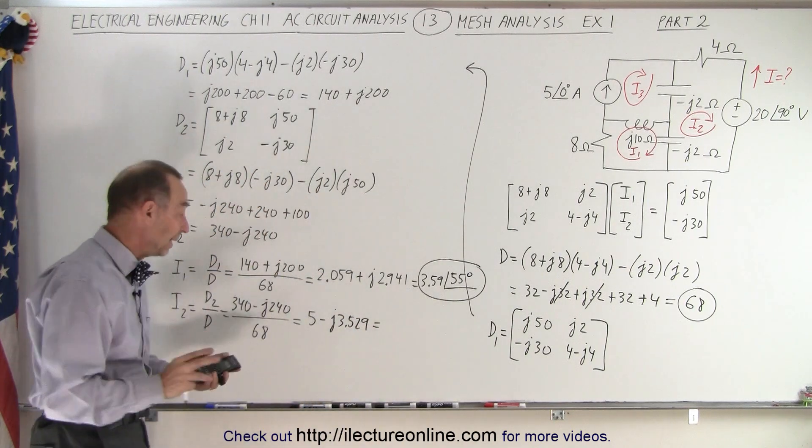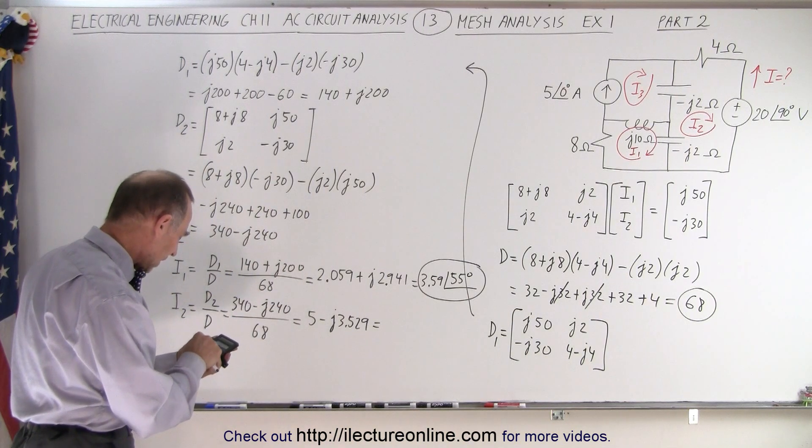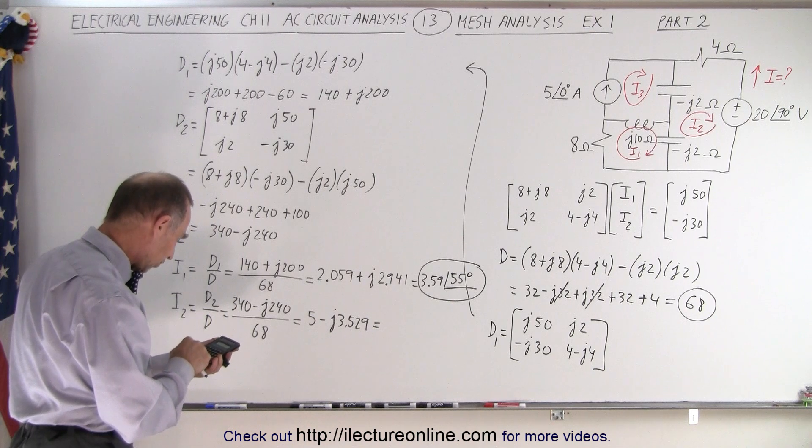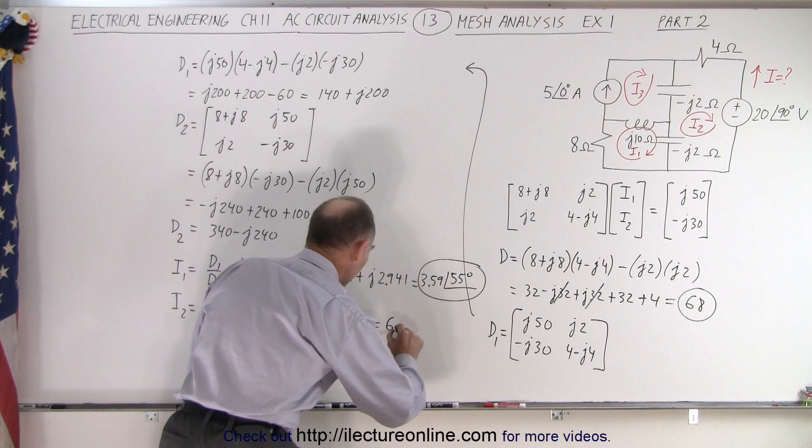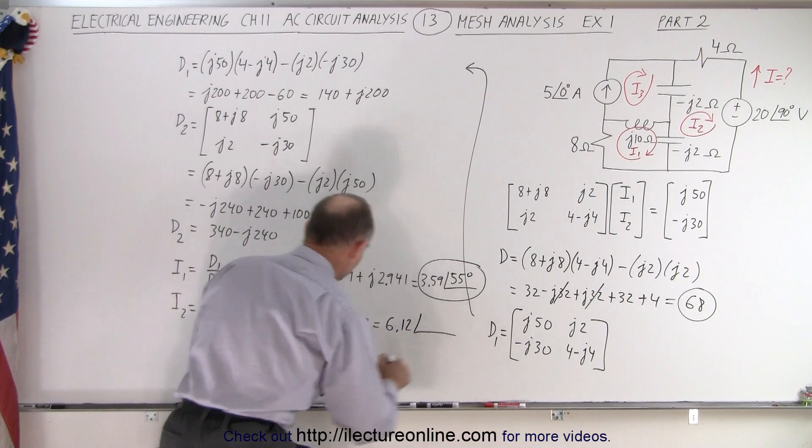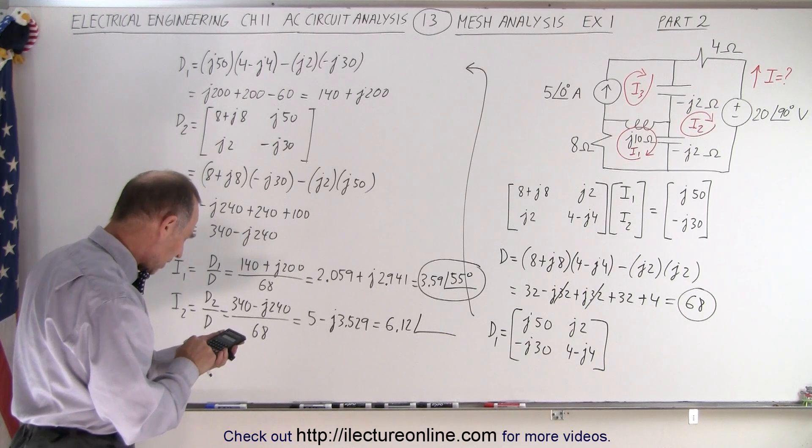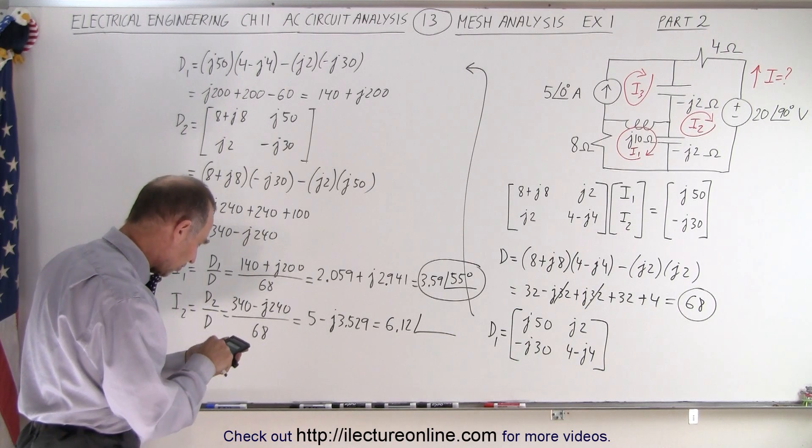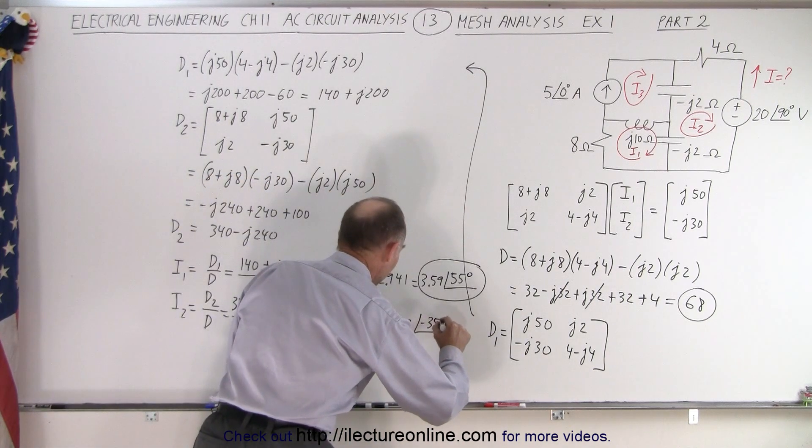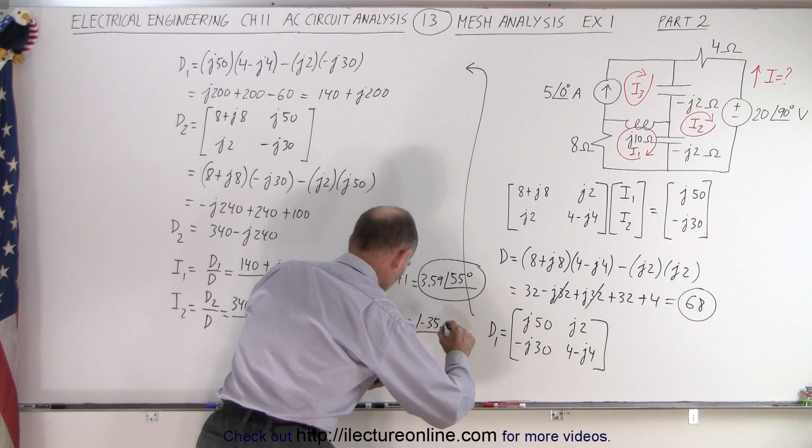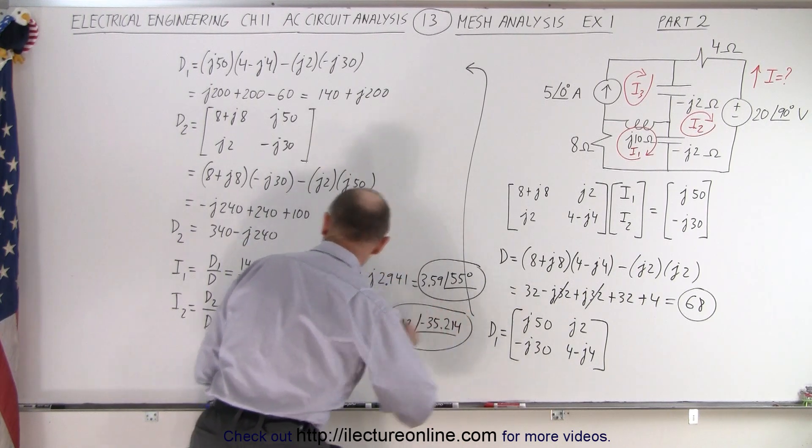So when we go ahead and convert that to magnitude and phase angle, so we square that, plus 25, take the square root of that, we get 6.12, 6.12 with a phase angle of 3.529 divided by 5, and take the inverse tangent of minus 35, minus 35.214. So that is equal to I2.